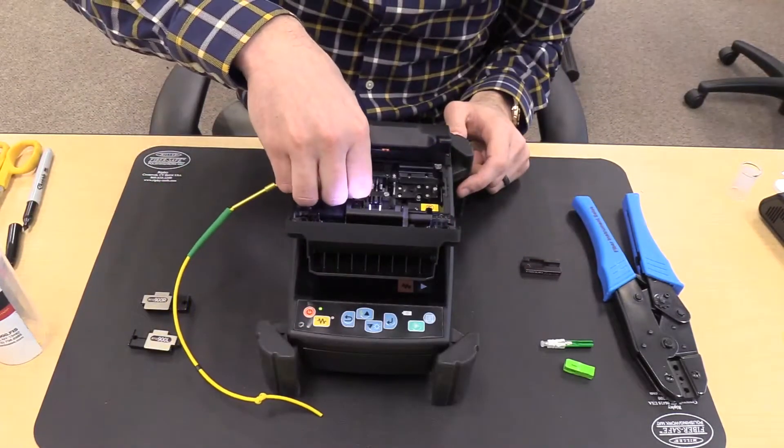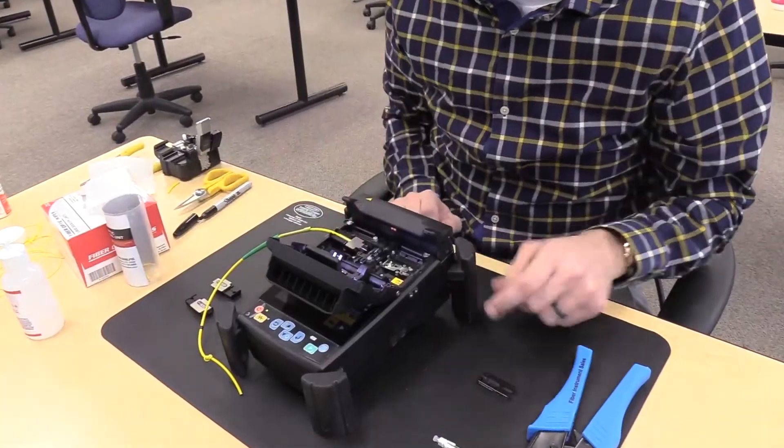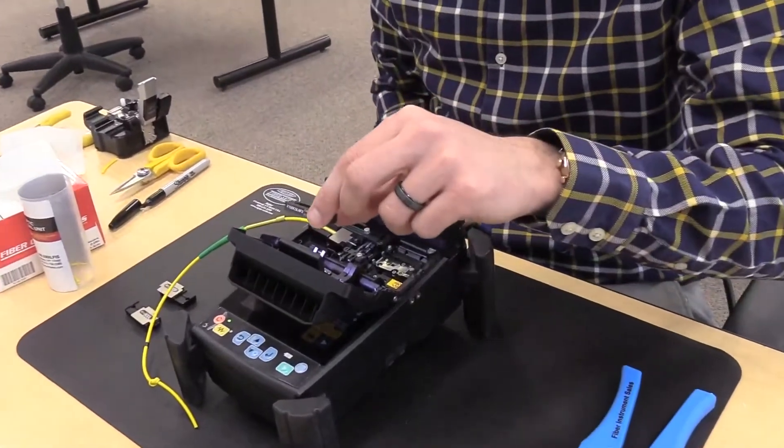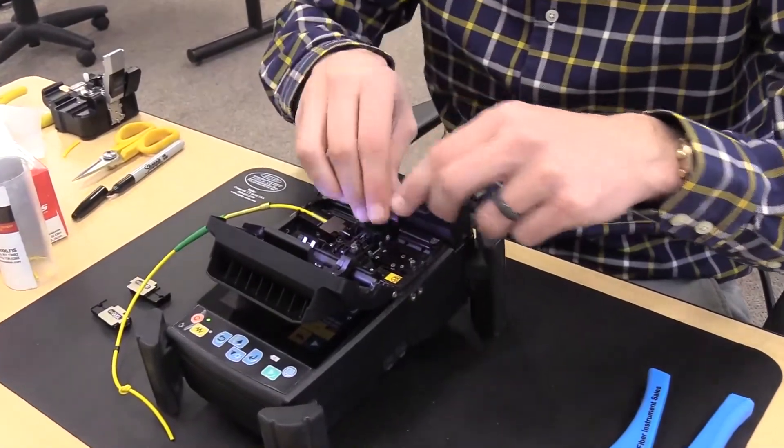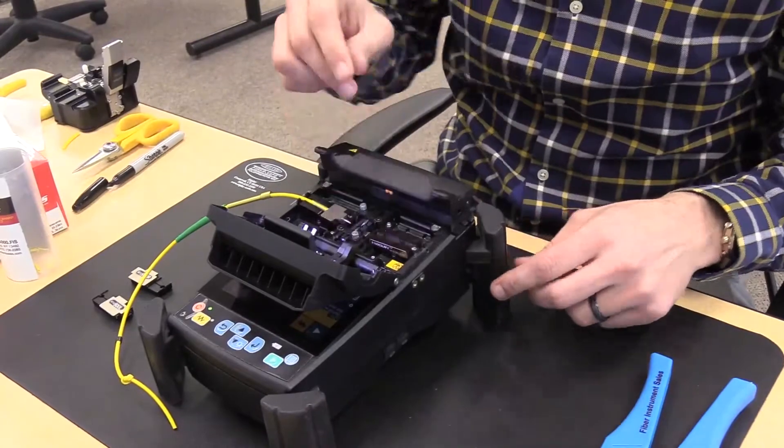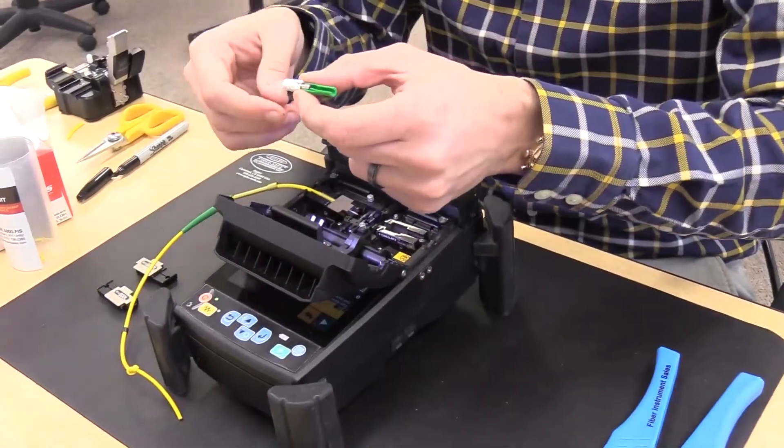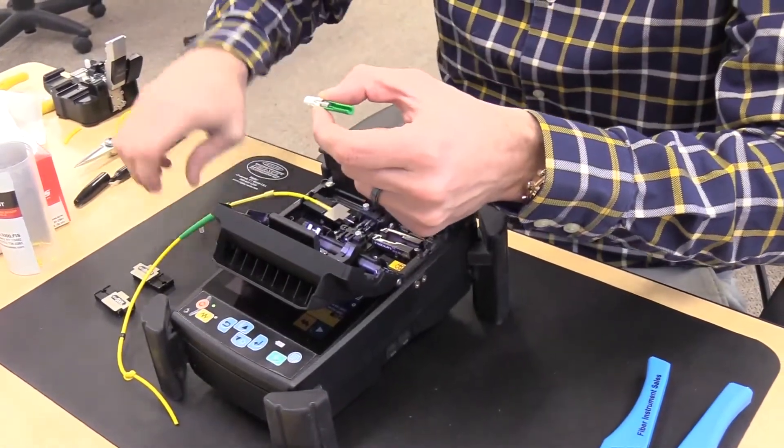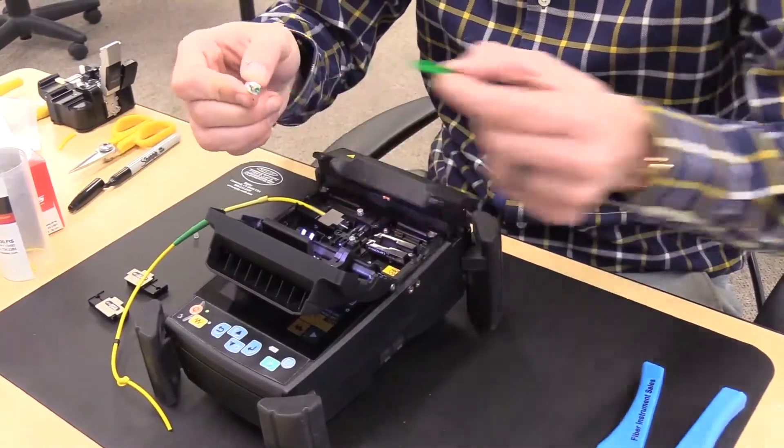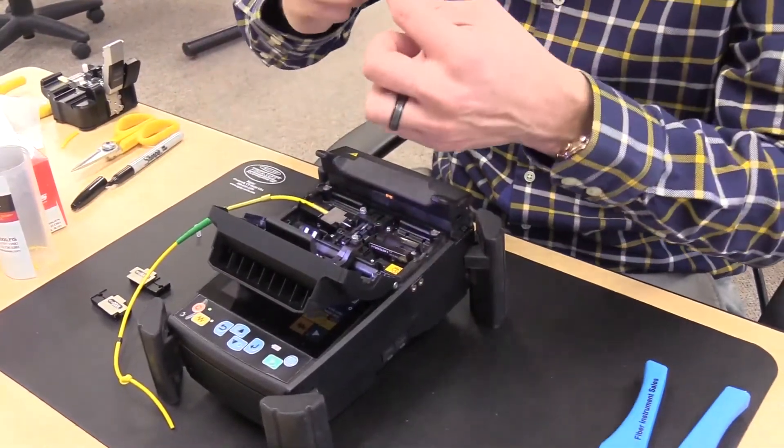Next, take the cleaved fiber that is in the holder and place it into the splicer. Then put in the FIS splice-on connector holder into the machine. Take off the dust cap and save it for after the installation. Remove the cleave protector on the connector and pull away without touching the fiber.